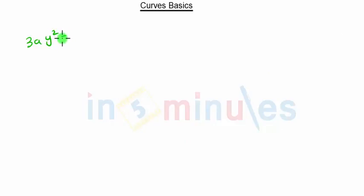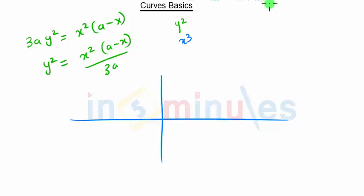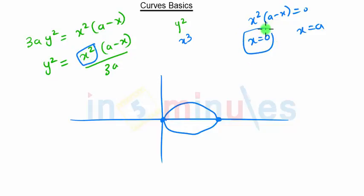Next we have the equation 3ay² = x²(a − x). We can write this as y² = x²(a − x) / 3a. Taking x inside gives x³, so this equation is quadratic in y and cubic in x, and will also have one loop. Putting y equal to 0 gives x²(a − x) = 0, so either x = 0 or x = a — these are the two loop points. The highest power is x², so at x = 0 the curve opens toward that point.